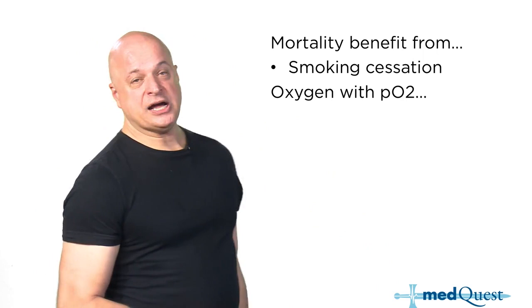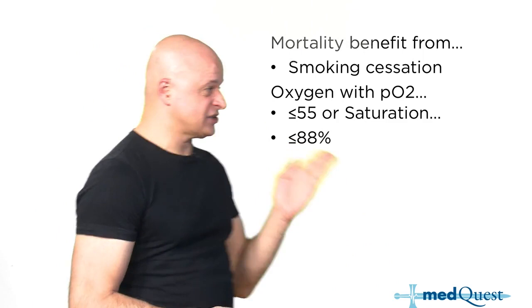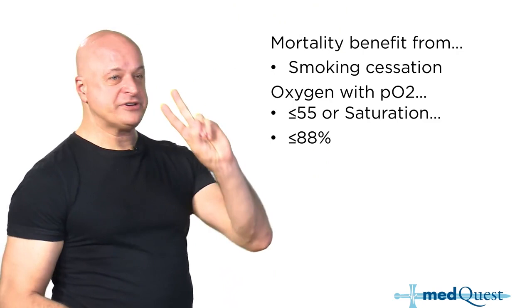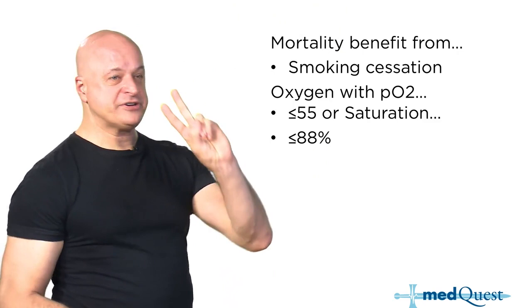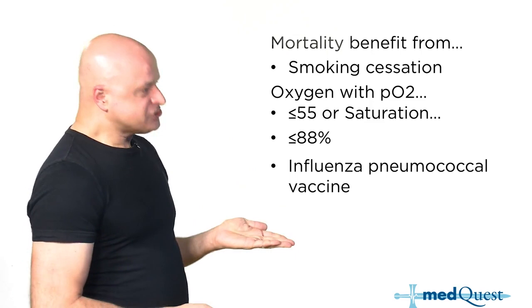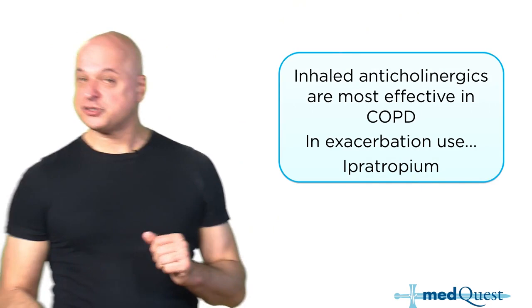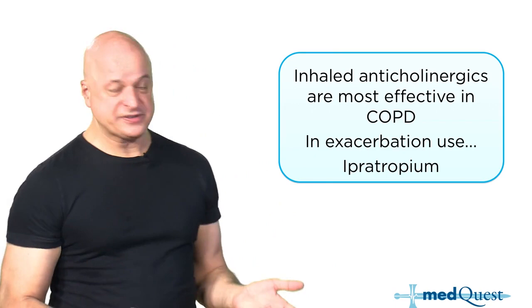The mortality benefit: stop smoking. Yeah, genius right? You need to come here to learn to stop smoking. And if you're hypoxic to give oxygen. Hypoxic means PO2 less than 55 or saturation less than 88 unless you have pulmonary hypertension or right atrial right ventricular hypertrophy, in which case it's 60 and 90 percent. Everybody gets influenza vaccine, everybody gets pneumococcal vaccine. Just like asthma, who gets the greatest benefit? 13 polyvalent then the 23.